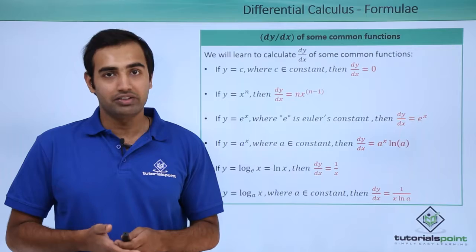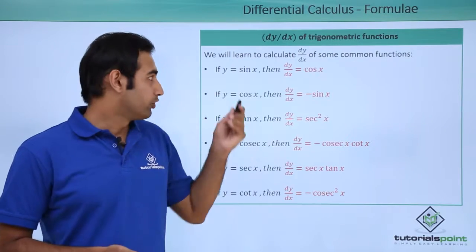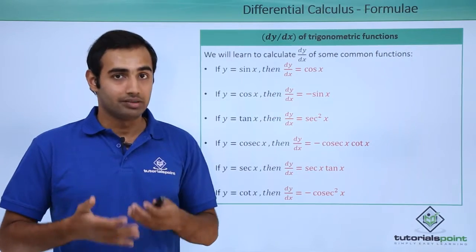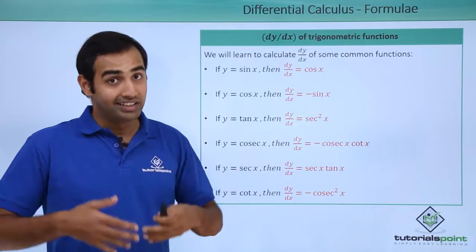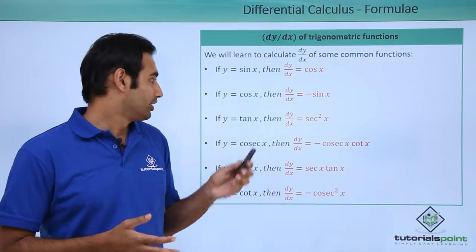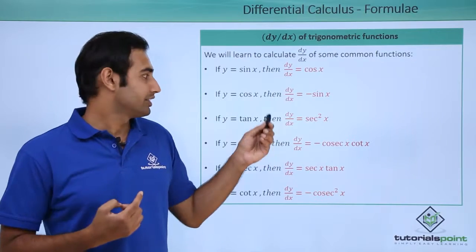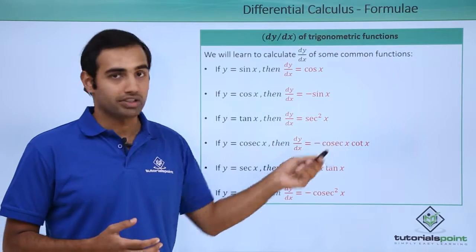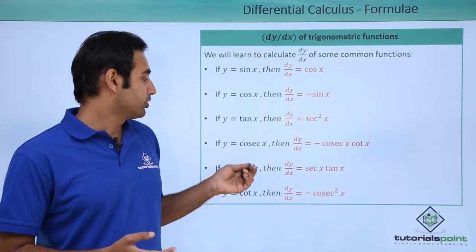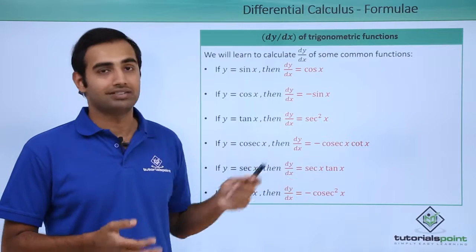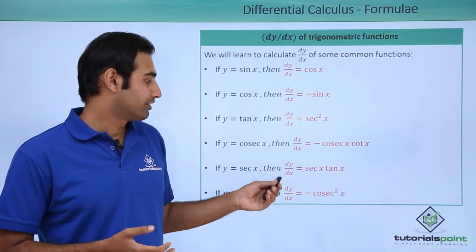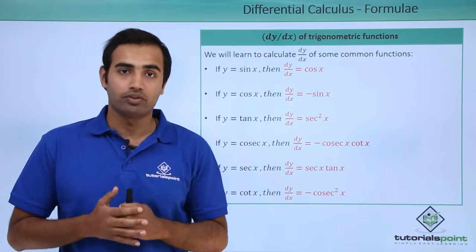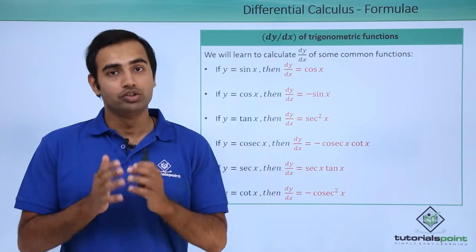Now the derivatives of trigonometric functions: if y = sin(x) then dy/dx = cos(x). If y = cos(x) then dy/dx = −sin(x). If y = tan(x) then dy/dx = sec²(x). If y = cosec(x) then dy/dx = −cosec(x)·cot(x). If y = sec(x) then dy/dx = sec(x)·tan(x). And if y = cot(x) then dy/dx = −cosec²(x). All these formulae are very important for solving problems in physics and must be remembered.